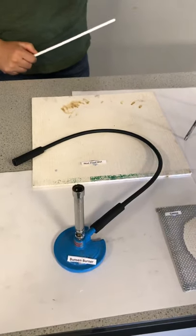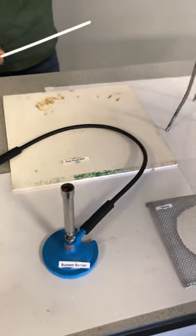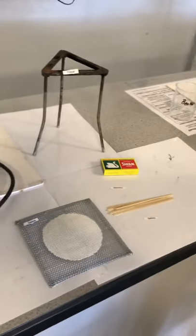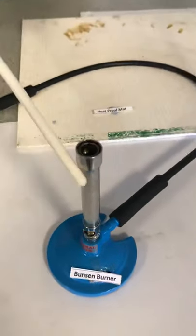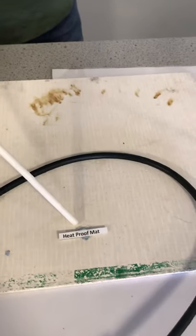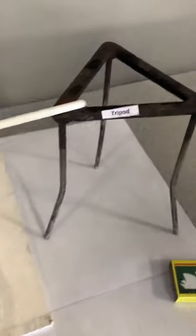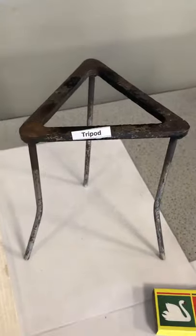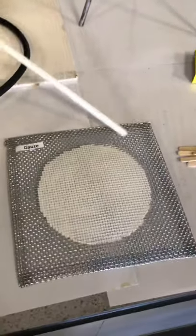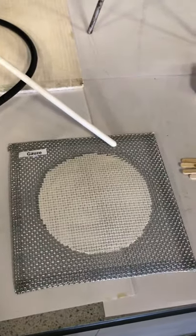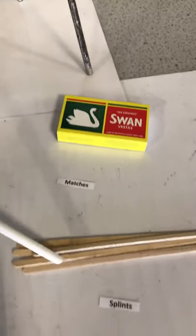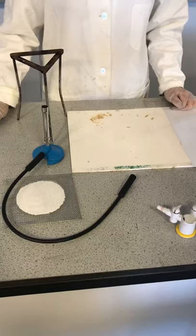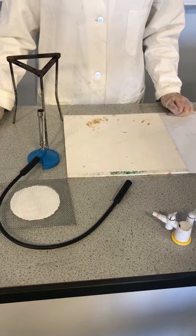Let's start the experiment. Step one: collect all the heating equipment required to do this experiment. We need a Bunsen burner, a heatproof mat, a tripod, ceramic gauze. We also need a matchbox and some wooden splints.